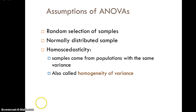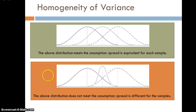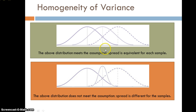Here's a visual example: the distribution on the green background shows the assumption of homogeneity of variance being met — the spread of each distribution is the same. In the orange background, the middle distribution has a much lower spread than the other two, so the assumption is not met. Therefore, we should not use a parametric test that assumes homogeneity of variance.